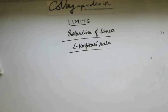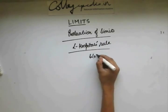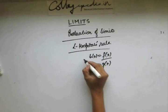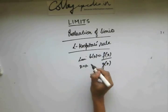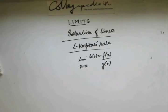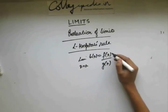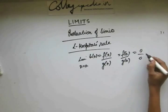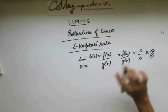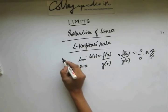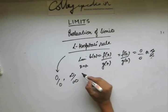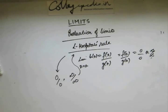Let's discuss what L'Hospital's Rule is. Say I have a function h given by f divided by g, and I have been asked to find the limiting value as x approaches a. If when I substitute a, f(a) and g(a) give a value of 0/0 or ∞/∞, then this rule is applicable only in those two cases.